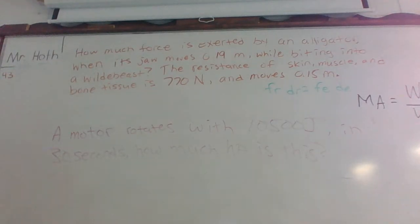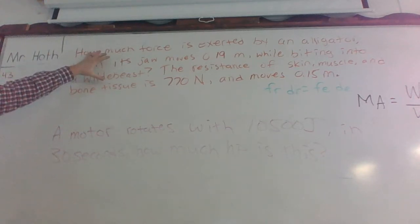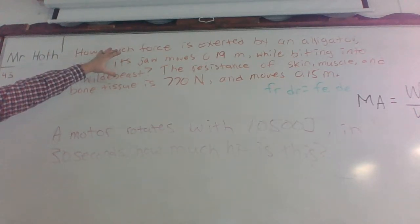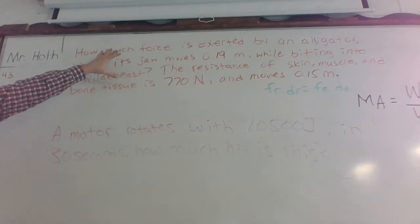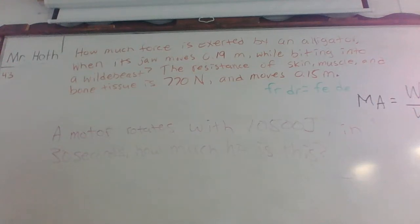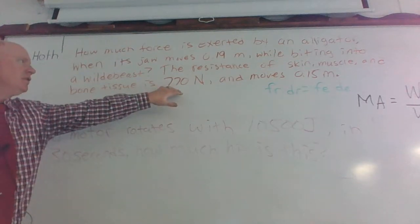So as we look at this problem up here in, what color is this? Brown, orange, what? Orange. Orange. Okay. So this problem in the orange. It says, how much force is exerted by an alligator when its jaw moves 0.19 meters while biting into a wildebeest. Okay. So the resistance of that skin, muscle, and bone tissue is going to have this much force of resistance.